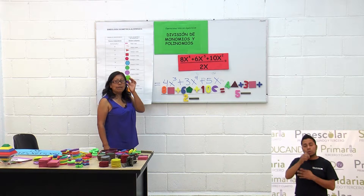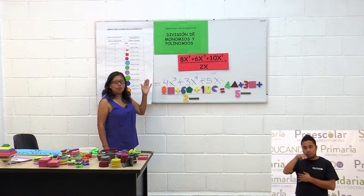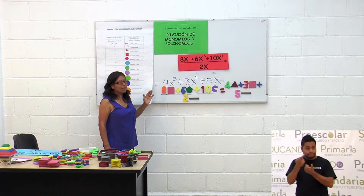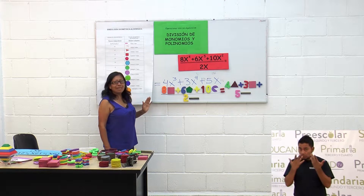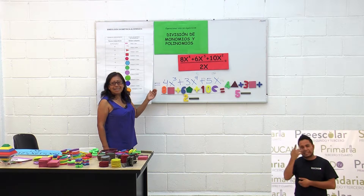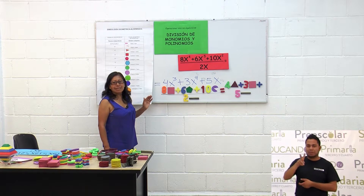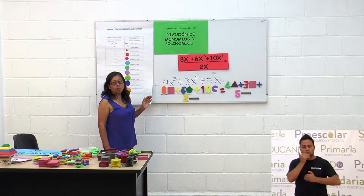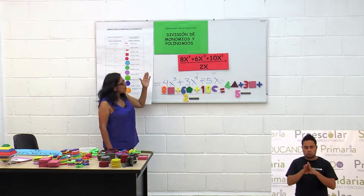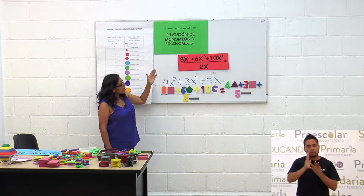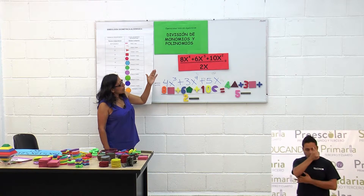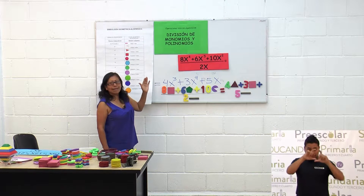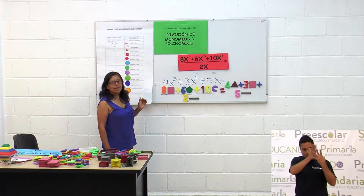¿Quedó claro? ¿Se comprendió? El procedimiento consiste en dividir cada uno de los términos del dividendo entre el divisor.